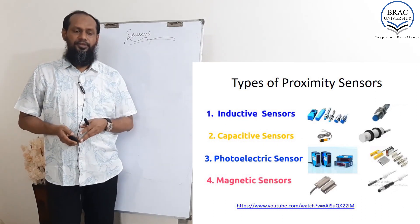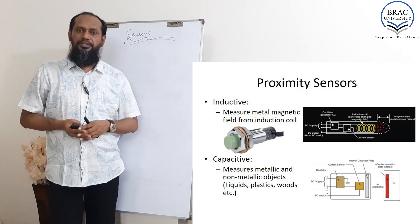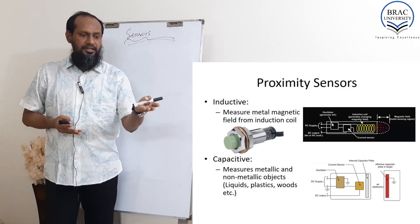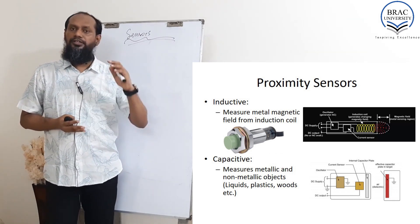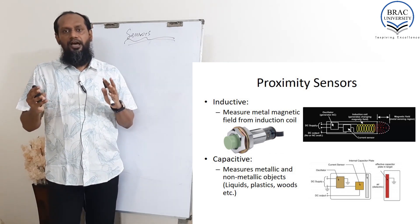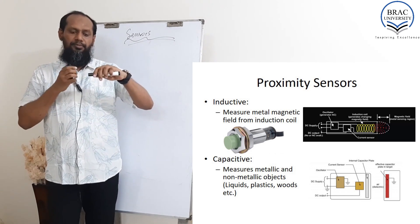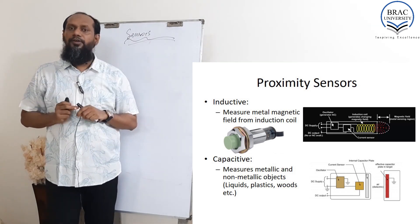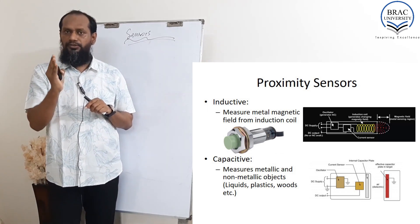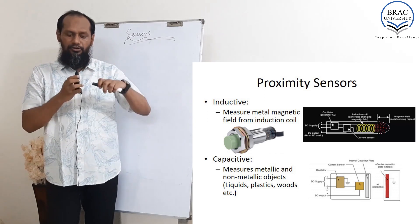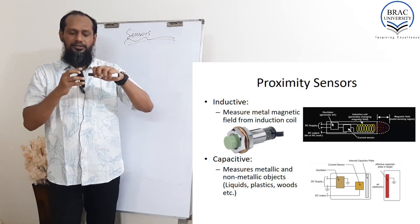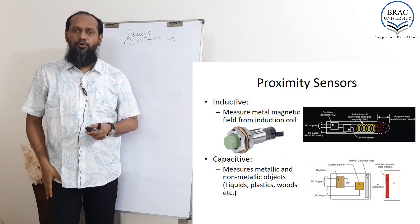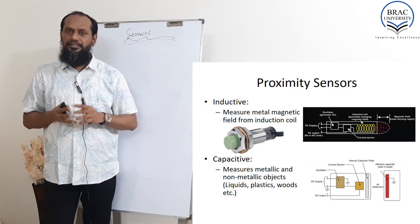In an inductive sensor, it measures the metal magnetic field from an inductive coil, so it is mainly used to identify metal. When any metallic object comes very close to it, it will activate — the magnetic field will be cut, the voltage difference will change, and it will identify one metallic thing crossing, then another. So by using the magnetic field, it is sensing the proximity. It is also commonly used.